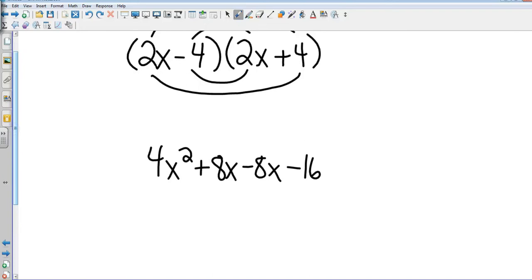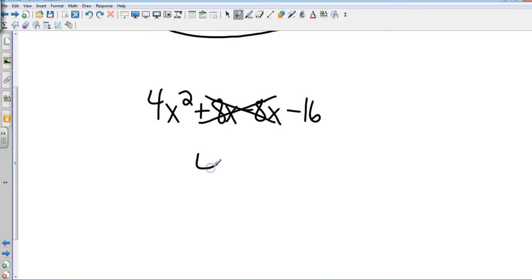If I have the exact same thing, one with a minus, one with a plus, what's going to happen every time is the middles are going to cancel out. So that's just 4x squared minus 16.